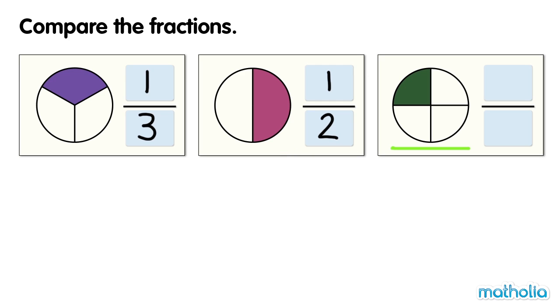This circle has four equal parts. One part is shaded. One quarter of the circle is shaded.